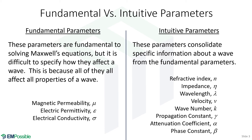From the permeability, permittivity, and conductivity, we can calculate a bunch of things. These parameters isolate specialized pieces of information — for example, refractive index, which summarizes the speed of the wave. The impedance summarizes the amplitude and phase relationship between E and H. Whereas if we look at conductivity, that's responsible for loss.